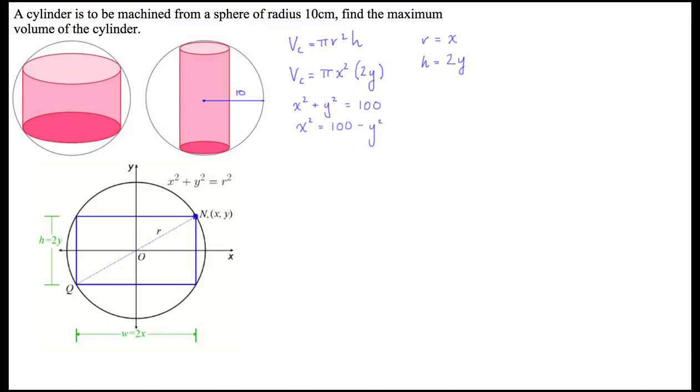So, now we have that. What we can do with that is we can then substitute that in for x squared in the volume function. So, if we do that, we're going to have the volume of a cylinder, in terms of y, equal to pi bracket, instead of x squared, we're going to write 100 minus y squared times 2y.